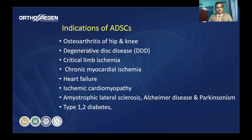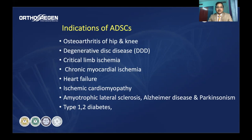In osteoarthritis, mesenchymal stem cells promote a pro-healing environment through exosome signals and energy. Beyond osteoarthritis, adipose-derived stem cells are being used for degenerative disc disease in the spine, critical limb ischemia, cardiac conditions including myocardial ischemia, heart failure and cardiomyopathy, and neurological disorders like amyotrophic lateral sclerosis, Alzheimer's, Parkinson's, as well as diabetes.